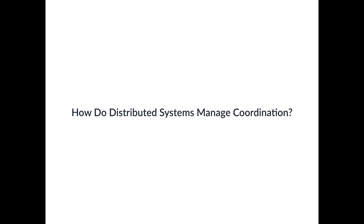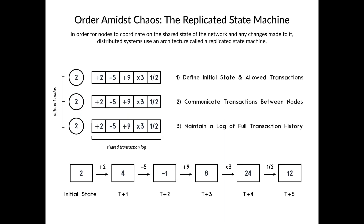Distributed systems need some way to maintain order so they can coordinate on how to handle any changes made to the state of the system. The easiest way to do this is with something called a replicated state machine, composed of three parts: defining an initial state and the valid transactions that can be made; nodes communicating and distributing transactions across the network so every node has a copy; and every node keeping a log of all historical transactions ever made. This allows nodes to apply transactions asynchronously while remaining consistent in behavior, which resolves a lot of the previously mentioned issues.